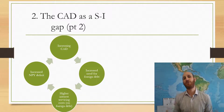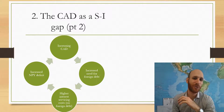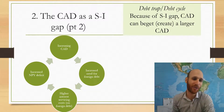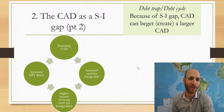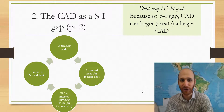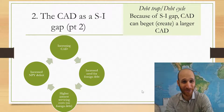If we think about the CAD as a savings-investment gap, we get what's called a debt trap or a debt cycle. Starting at the top of the cycle: there's an increase in the current account deficit, which means Australia needs to increase its foreign debt and foreign borrowings to fund that current account deficit.